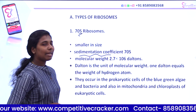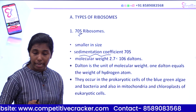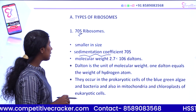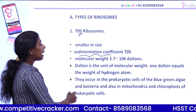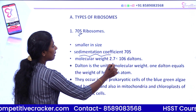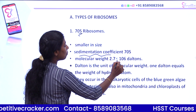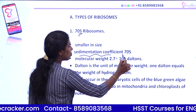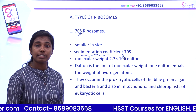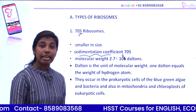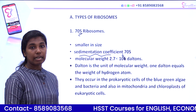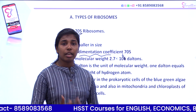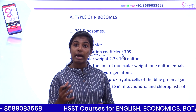The 70S ribosome is smaller in size and is found in prokaryotes. Its molecular weight is 2.7 × 10⁶ Daltons. Dalton is a molecular unit — one Dalton equals the weight of one hydrogen atom.